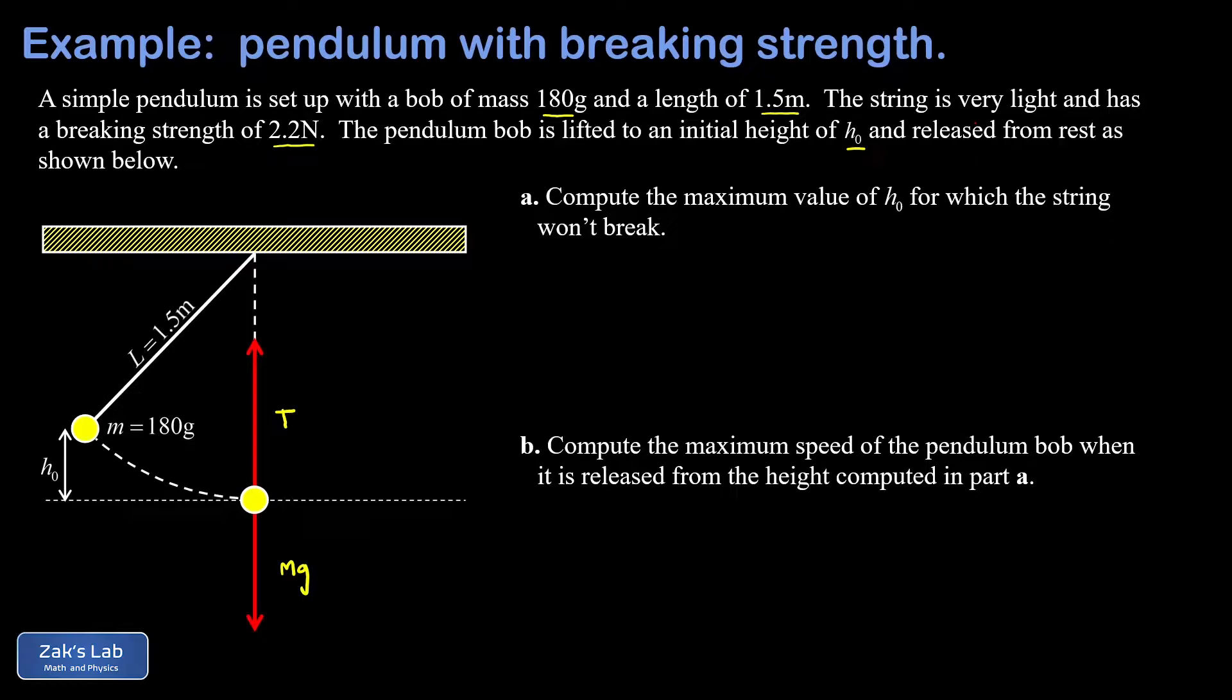And we know the tension is maximized here because the speed of the pendulum bob is at its greatest value here at the lowest point in the trajectory. So we have the greatest centripetal acceleration, v squared over r. And in addition, the force of gravity is directly opposed to the tension in this configuration. And that requires even more tension in order for our forces to sum to the required total value of the centripetal force.